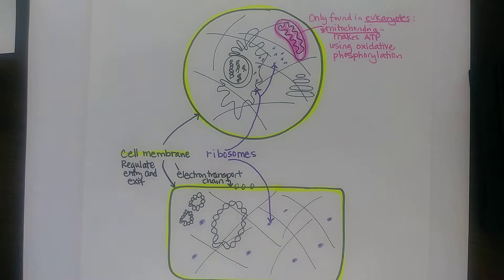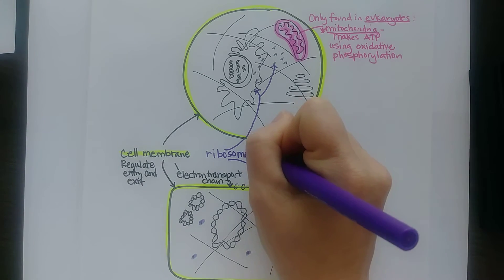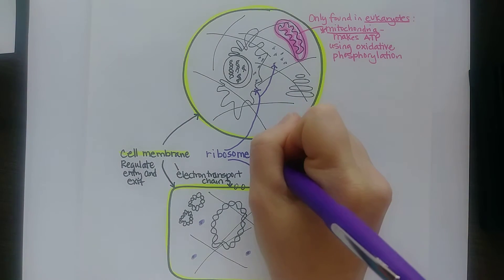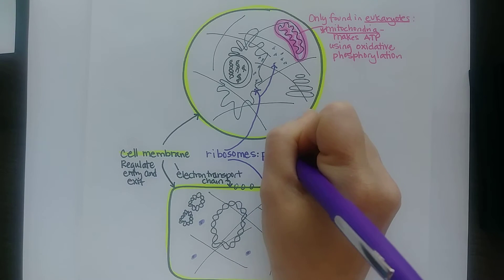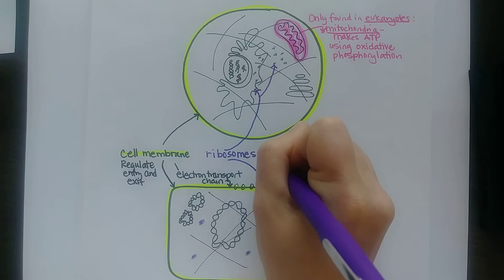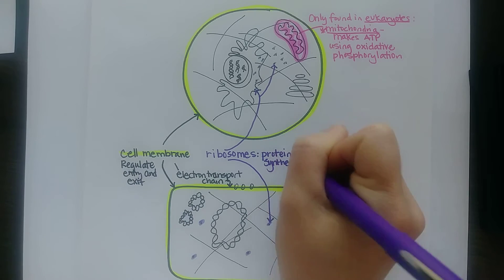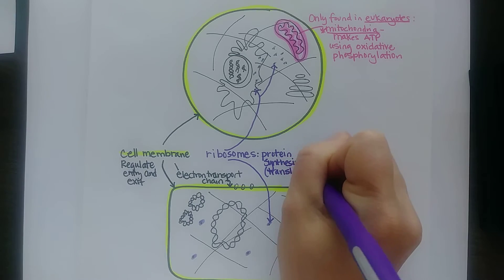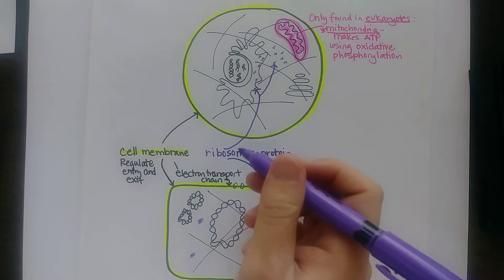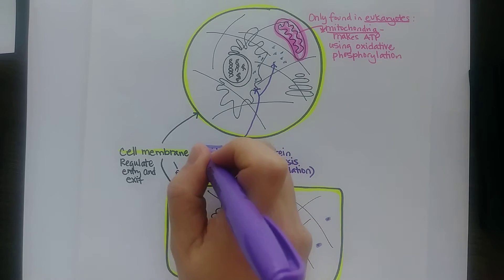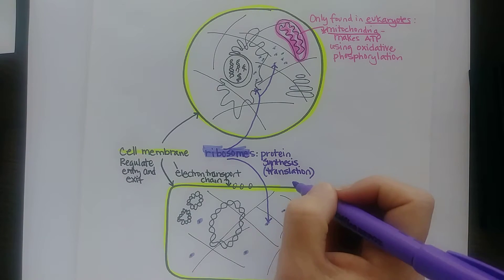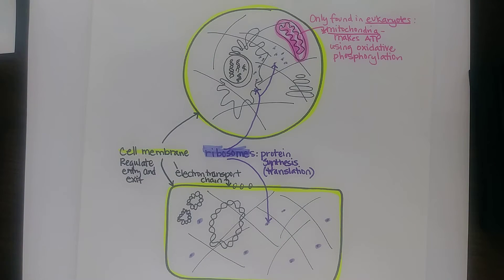The job of ribosomes, as you may remember, is to translate mRNA into protein. We call that protein synthesis, or it's the site of translation. Ribosomes perform protein synthesis and are found in both prokaryotes and eukaryotes.